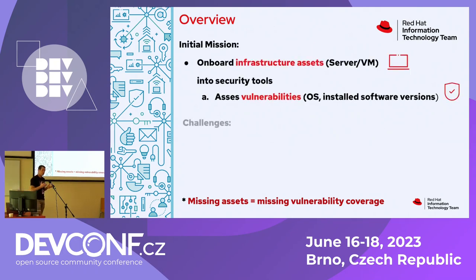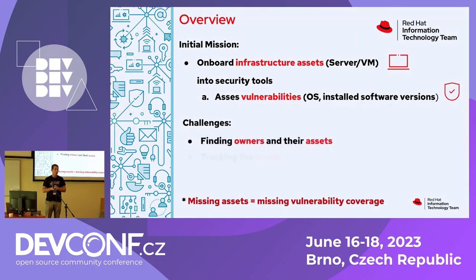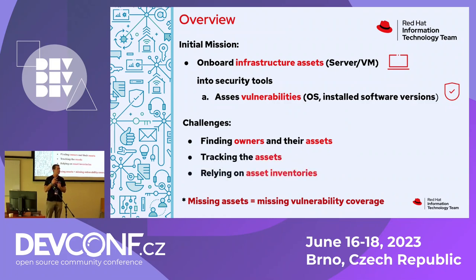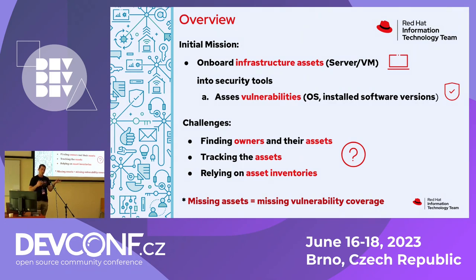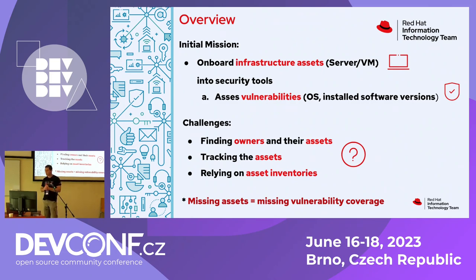Our initial mission as a team was to get assets at Red Hat — systems, servers, and virtual machines — into our security tools so we can see vulnerabilities, specifically operating system, third-party, and software vulnerabilities from an infrastructure perspective. At Red Hat, like similar large companies, finding owners and systems is a big challenge. We have inventories and CMDBs, but it's often very hard to get the exact data you need. Getting in touch with teams is a big deal, and the assets themselves just keep changing all the time. So we were looking for alternatives.